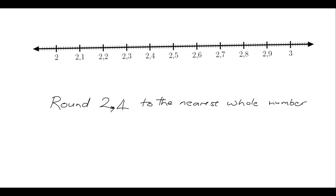So 2.4 — 2.4 is 2 and a little bit. We know that the whole numbers close to 2.4 are 2 and of course the next one, which is 3. So 2.4 lies somewhere between 2 and 3. You know what your number line looks like by now, so you can easily picture where 2.4 sits on the number line.